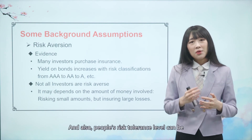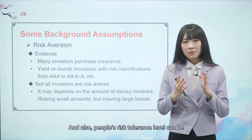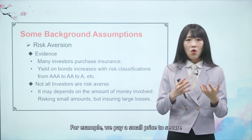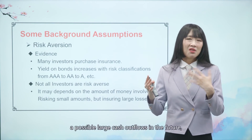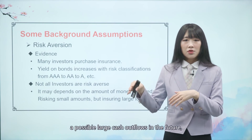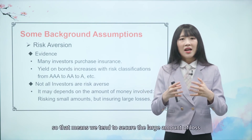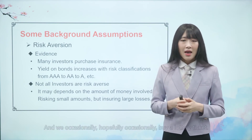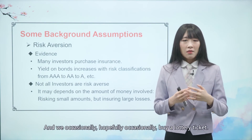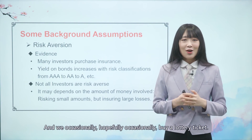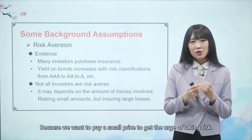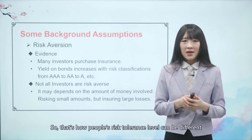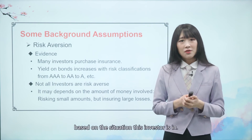People's risk tolerance level can also be specific to the level of money involved. We pay a small price to secure against possibly large cash outflows in the future. And we occasionally buy a lottery ticket because we want to pay a small price for the urge of taking risk. That's how people's risk tolerance level can differ based on the situation the investor is in.